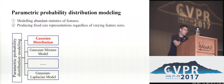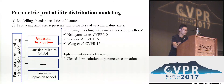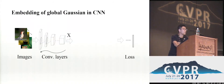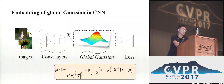More importantly, parametric probability distribution models have powerful capability to model the statistics of features. Examples include Gaussian distribution, Gaussian mixture model, and Gaussian-Laplace model. Among them, Gaussian distribution has shown promising modeling performance and is very competitive with or better than traditional coding methods. Meanwhile, Gaussian distribution is also of high computational efficiency because of its closed-form solution for parameter estimation.